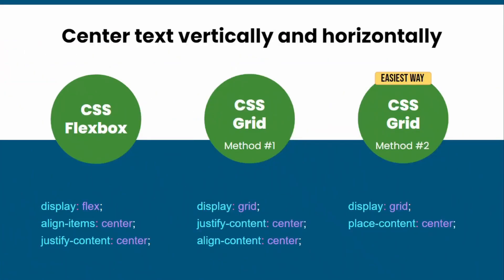In conclusion, if you are using CSS flexbox then you can simply use these three lines of code to center text vertically and horizontally. If you are using CSS grid, you can either use method one with three lines of code, or use the easiest way with just two lines of code using place-content: center. That's it everyone, I hope you liked this and I will see you in the next one.